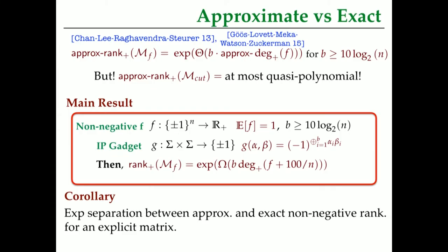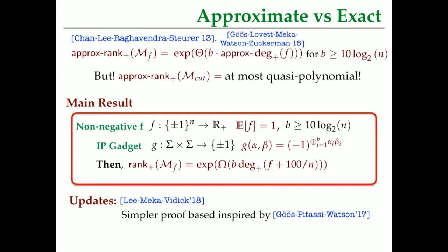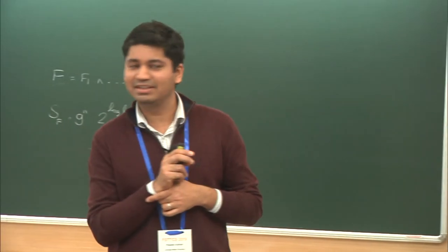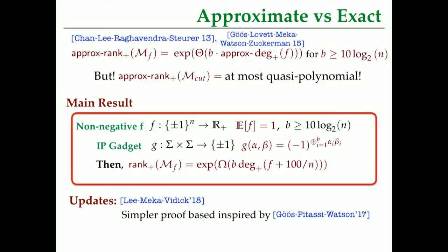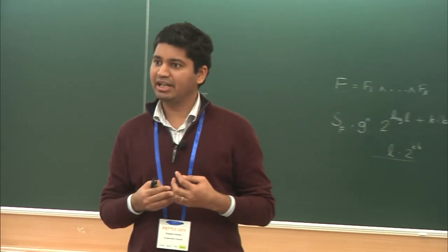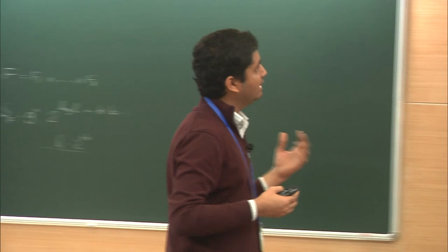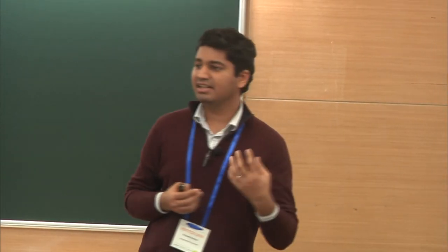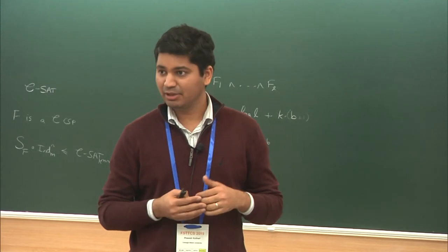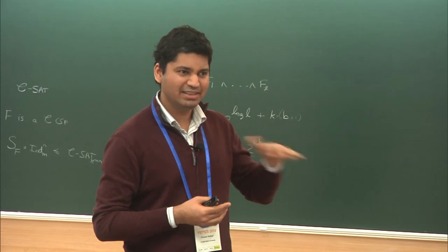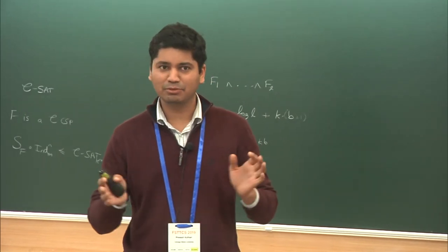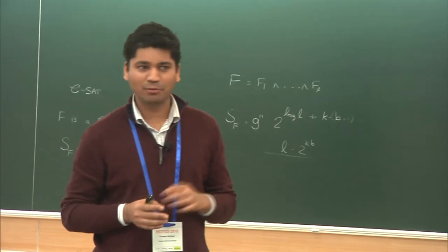One key conceptual point is that we somehow have to really exploit the distinction between approximate non-negative rank and non-negative rank to prove the right lower bound here. This result is about two years old from 2017. A year after, Tony and Thomas Watson gave a cool proof for query-to-communication lifting for BPP, and using those ideas, James Lee, Raghu Meka, and Thomas Vidick were able to give a slightly simpler proof of the same result. That's not what I'm going to present because I don't know that proof, and there isn't a manuscript out with it yet.